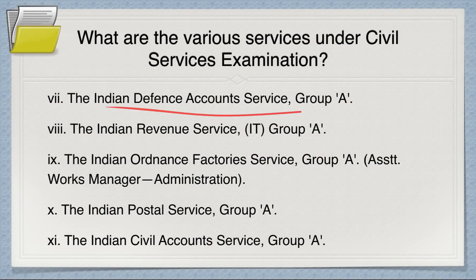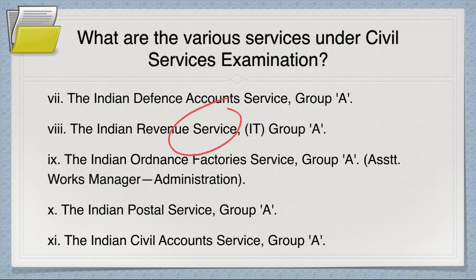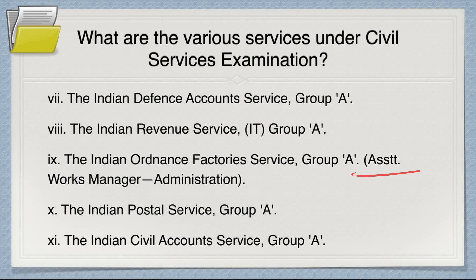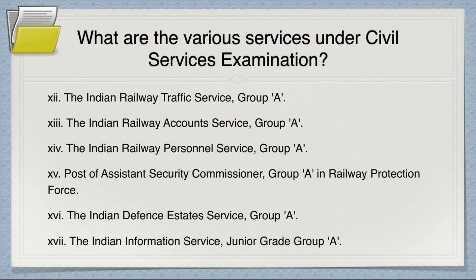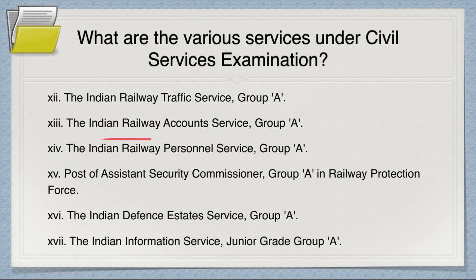Indian Defence Accounts Services is a Group A service. Indian Revenue Services IT is also Group A. Indian Ordnance Factory Service is Group A and you work as an Assistant Works Manager (Administration). Then there is the Indian Postal Service and Indian Civil Accounts Services. There is also the Indian Railway Traffic Service (IRTS), which can go very high up.